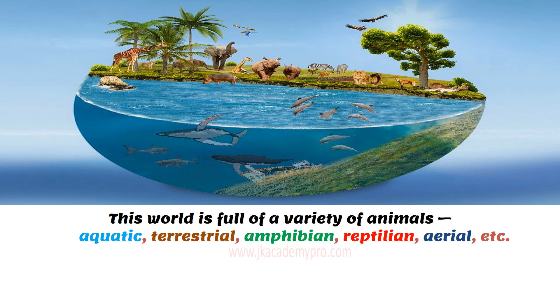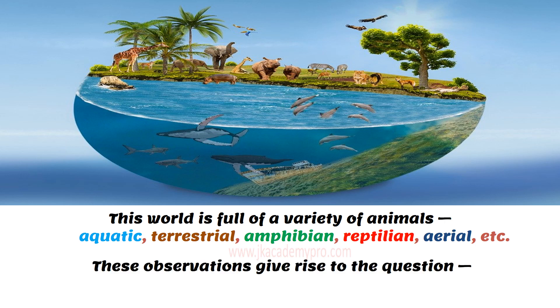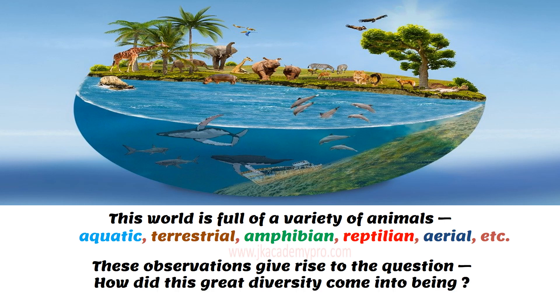Reptilian — animals that are crawling. Aerial — animals that fly. These observations give rise to the question: how did this great diversity come into being?